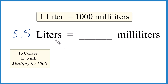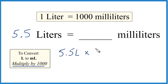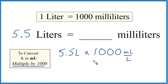To convert from liters to milliliters, we're going to multiply by a thousand. So 5.5 liters multiplied by a thousand milliliters per one liter. Now when we do the multiplication, we have liters on top and on the bottom — they cancel out. We're left with milliliters, and that's what we're looking for.